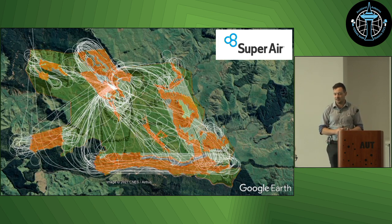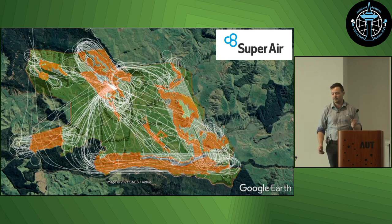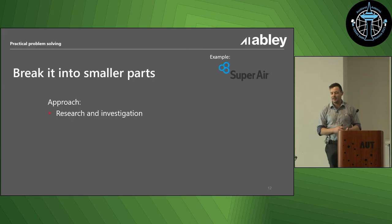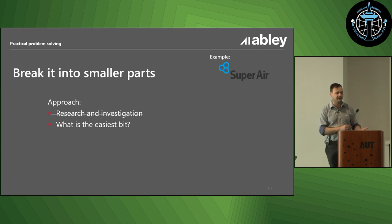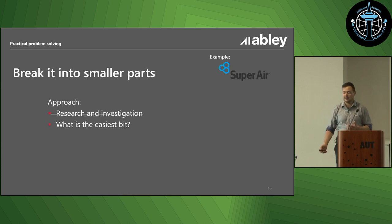Jumping back to Super Air. Breaking into smaller parts - the first thing I wanted to do was research and investigation. Has anyone done a thing where they're looking at flight lines before, that we could use to start getting cost estimates? Unfortunately there wasn't. There's 3D flight modeling, but 2D flight modeling - which was the simpler thing we actually needed - didn't really exist. So, what's the next easiest bit?